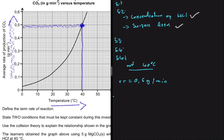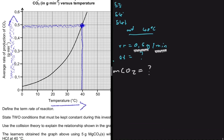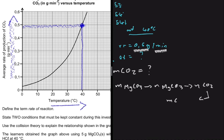We are looking for delta T, the time. Since our rate is in grams per minute, if we find the mass of CO2 formed we can find delta T. We are given the mass of MgCO3, from which we find moles of MgCO3. Using mole ratios, we find moles of CO2, then the mass of CO2, and finally substitute into the rate equation to find time.